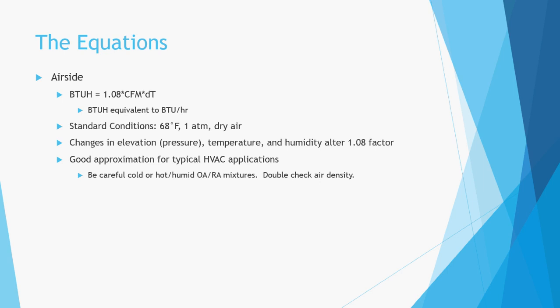As will almost always be the case, your situation won't be at standard conditions. Changes in temperature, humidity, and elevation — which correlates to different atmospheric pressure — alter the 1.08 factor. However, with typical HVAC applications this equation is close enough. Where you have to be extra careful is for cold or hot and humid outside air and return air mixtures at air handler coils, as those conditions change the air density and affect this equation.